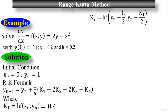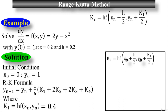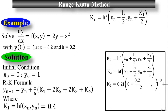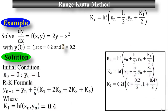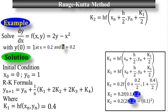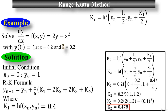The formula for k₂ is h times f(x_n + h/2, y_n + k₁/2). Substituting the values where h = 0.2, x₀ = 0, y₀ = 1, and k₁ = 0.4: this equals 0.2 times f(0.1, 1.2), where f(x, y) = 2y minus x squared with y = 1.2 and x = 0.1. The final value for k₂ is 0.478, which is the approximate value for the second stage.